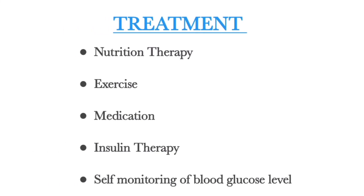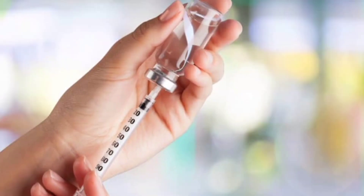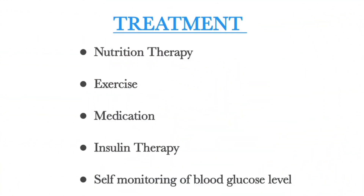Next, the treatment of diabetes mellitus. First is nutrition therapy — a treatment based on nutrition that includes checking a person's nutritional status and giving the right food or nutrients to treat the condition. Second is exercise. Third is medication, such as metformin, Fortamet, and Glumetza. Next is insulin therapy — insulin is a hormone produced by the pancreas, and insulin therapy is an important part of diabetes treatment, with the goal of keeping blood sugar levels in the normal range. Last is self-monitoring of blood glucose level.